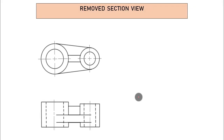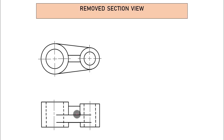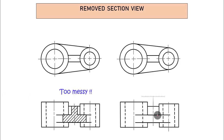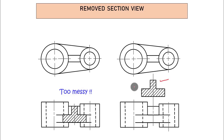The benefit of removed section is clarity. If you used a revolved section for a complex shape, the cross-section placed inside the object would cause confusion. By using removed section, you take the shape outside and place it above the object, so it is clearly visible without affecting the overall appearance of the object.